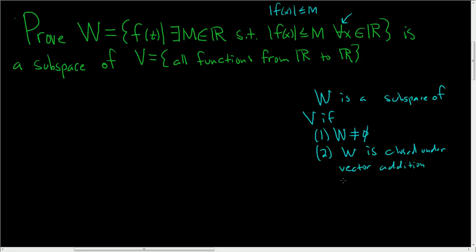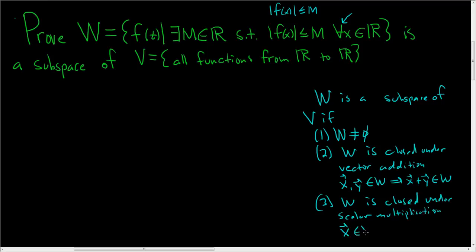That means given any two vectors in W, the sum of the vectors is also in W. So in this problem, our vectors are actually functions. So it's a little bit different. And three, W is closed under scalar multiplication.